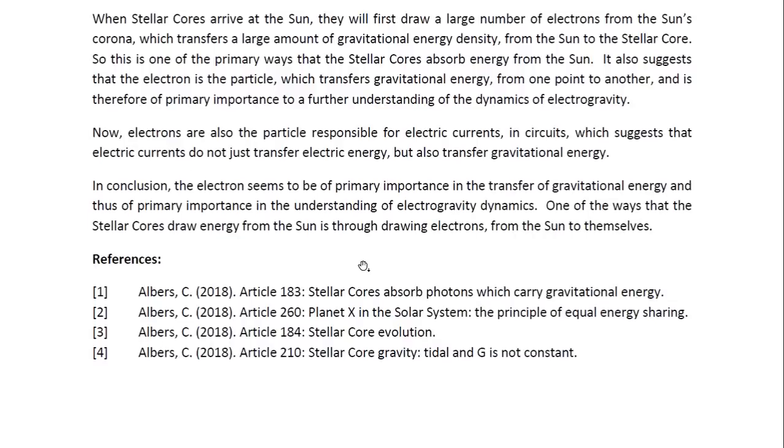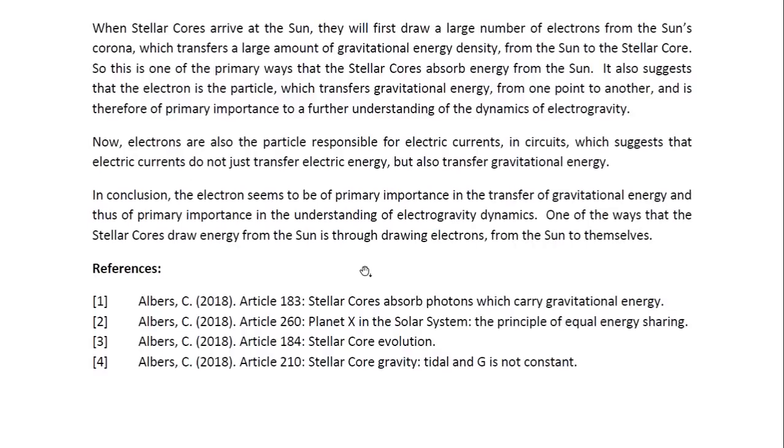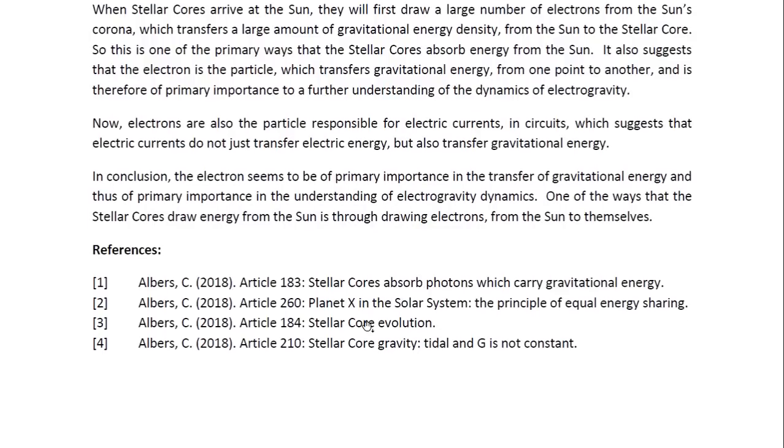In conclusion, the electron seems to be of primary importance in the transfer of gravitational energy, and thus of primary importance in the understanding of electrogravity dynamics. One of the ways that the stellar cores draw energy from the sun is through drawing electrons from the sun to themselves. Now, we have the references here. This is Dr. Claudia Albers, Planet X physicist. Thank you for watching.